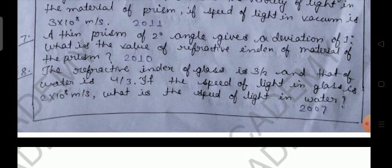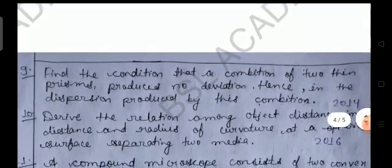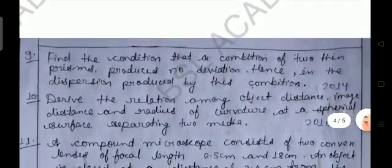Next: The refractive index of glass is 3/2 and that of water is 4/3. If the speed of light in glass is 2×10^8 meter per second, what is the speed of light in water? 2007. These are your numerical problems and also very easy, so please complete it carefully.